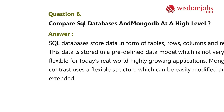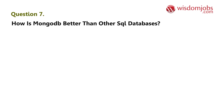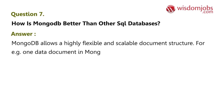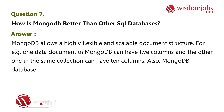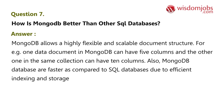Question 7: How is MongoDB better than other SQL databases? Answer: MongoDB allows a highly flexible and scalable document structure. For example, one data document in MongoDB can have five columns and another one in the same collection can have ten columns. Also, MongoDB databases are faster compared to SQL databases due to efficient indexing and storage techniques.